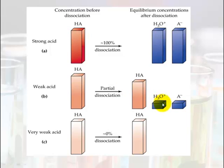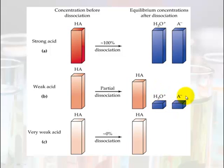For ethanoic acid as the weak acid example, most of it remains as ethanoic acid; some of it forms hydronium and some forms CH₃COO⁻. A very very weak acid will basically not ionize at all in water, so it will remain as the acid.